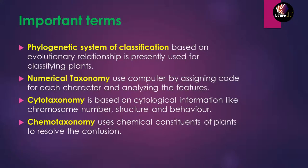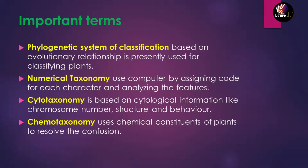Now let us understand some important terms. Numerical taxonomy involves using computers and assigning codes to different characters, then analyzing their features numerically. Cytotaxonomy is classification based on chromosomes — their number, structure, and behavior inside a cell. Chemotaxonomy uses chemical constituents of plants to resolve confusion in classification.